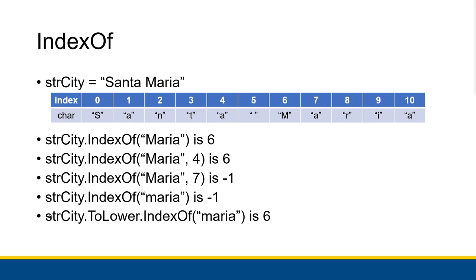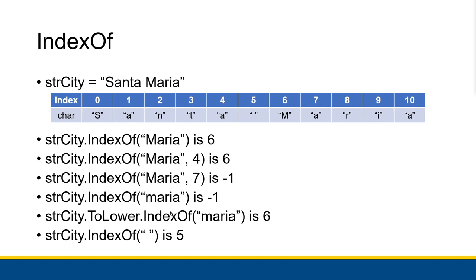If I look at stringCity and take the all-lowercase version of it — not modifying stringCity, just looking at the equivalent all-lowercase string — now it's 'santa maria' all lowercase. If I then find the indexOf the string containing 'maria' all lowercase, it shows up as six because the uppercase M at index six becomes lowercase in the toLower version. I can also look for the index of just a space, and indexOf returns five — which is really helpful because we can use this to split off words from each other in a string, getting 'Santa' and 'Maria' separately.